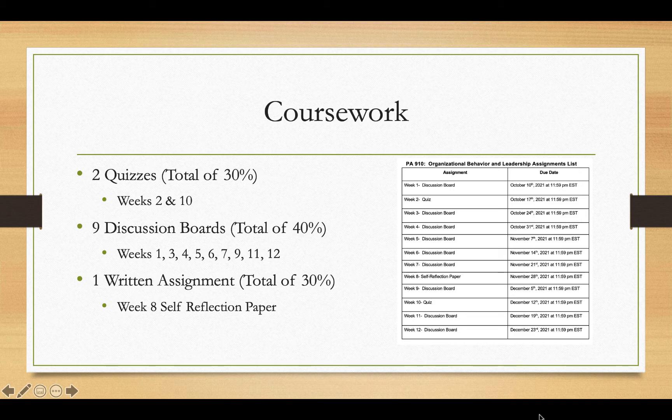The coursework for this class includes two quizzes which account for 30% of your grade, completed in weeks 2 and 10. There are nine discussion boards which total 40% of your grade. There is one written assignment due in week 8 called the self-reflection paper, worth 30% of your grade. On the right-hand side you will see an assignments list that tells when your assignments are due. This list is also available in Moodle — about a quarter of the way down the page — as a printable Microsoft Word document.